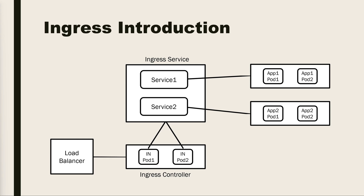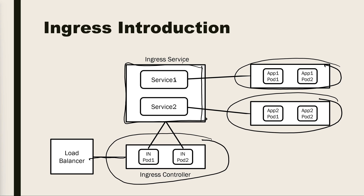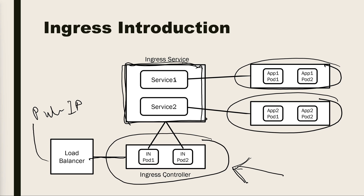This is the architecture diagram of the ingress controller. First, the ingress controller is created where one or more pods are created based on requirement, and it is directly linked to the load balancer. Applications like application 1 and application 2 each have a ClusterIP internal service, so they are not exposed to the internet. An ingress service is created to manage the routing, and based on the rules defined in the ingress service, the ingress controller creates a public IP in the load balancer along with path-based or host-based routing rules, and we can also assign TLS certificates.